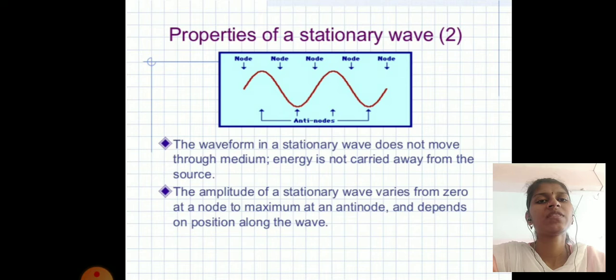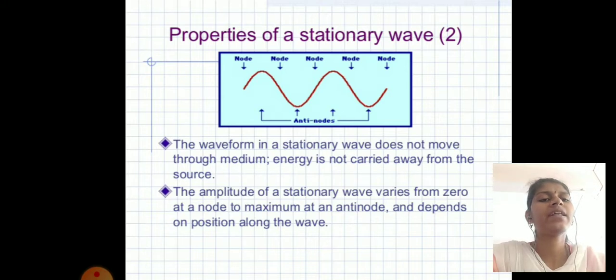The third property is the amplitude of a stationary wave varies from zero at a node to a maximum at anti-nodes, and depends on position along the wave.